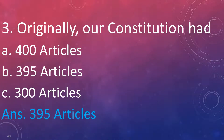Number three: originally, our constitution had — option A, 400 articles; option B, 395 articles; option C, 300 articles. All the students are able to give the answer. The correct answer is 395 articles. Originally, our constitution had 395 articles.